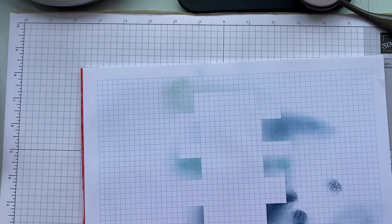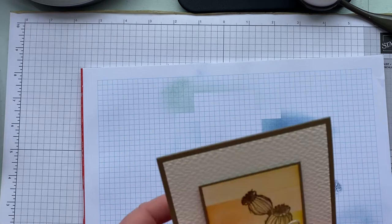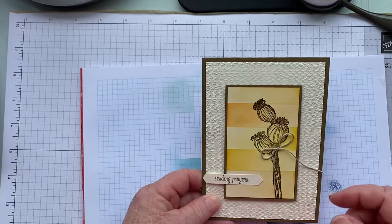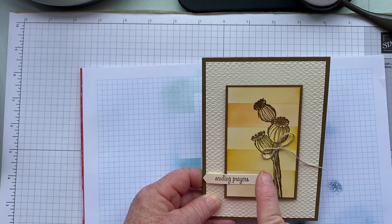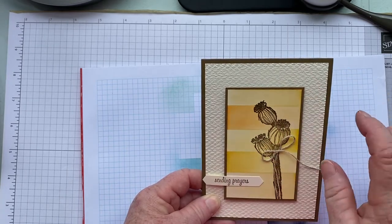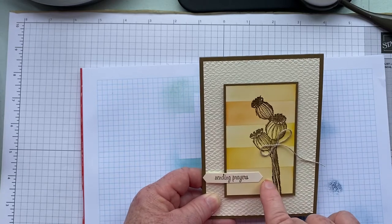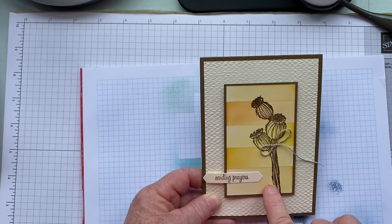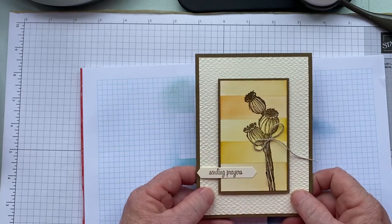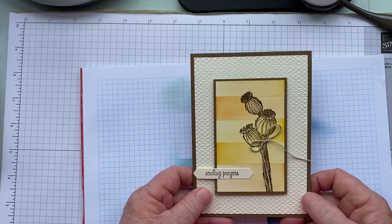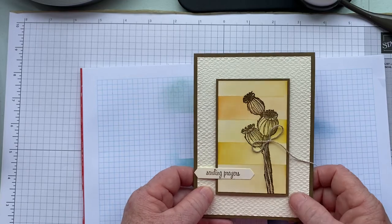This is one I've done. I've used Crushed Curry, Pumpkin Pie, Bumblebee, and So Saffron. So that's So Saffron, Bumblebee, Crushed Curry, Pumpkin Pie, and So Saffron. I've turned that into a sympathy card. I've used the Textile Textures embossing folder and that lovely stamp set - Enjoy the Moment. So that's that one.